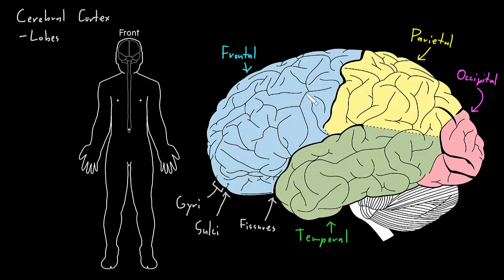There's a lot going on in the cerebral cortex — it's really the most complex part of the entire nervous system. The most complex types of information processing and functions of the nervous system occur here. I'm just going to briefly touch on a couple of the functions, particularly some senses and motor functions, and save the other details for later videos.